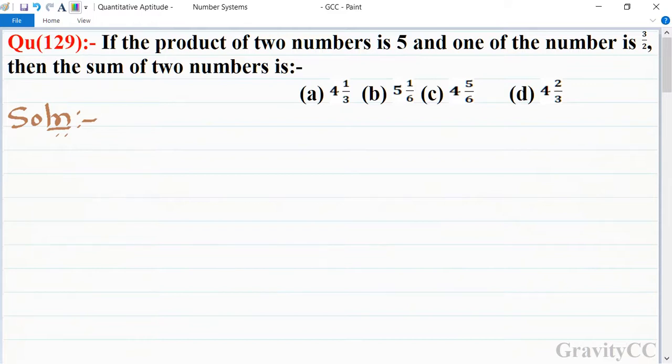Quantitative aptitude, chapter number system, question number 129. If the product of two numbers is 5 and one of the numbers is 3 upon 2, then the sum of two numbers is what? In this question, the product of two numbers is given as 5 and one of the numbers is 3 upon 2, so find the sum of the two numbers.